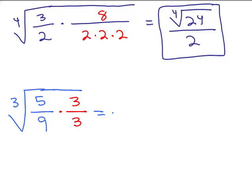In the numerator, I've got the cube root of 15. And in the bottom, what am I going to end up with? The cube root of 27 or the cube root of 3 cubed is just going to be 3.